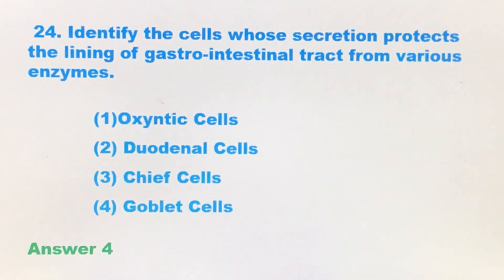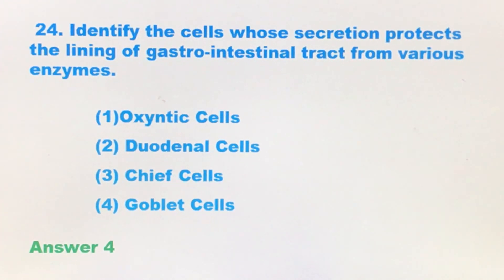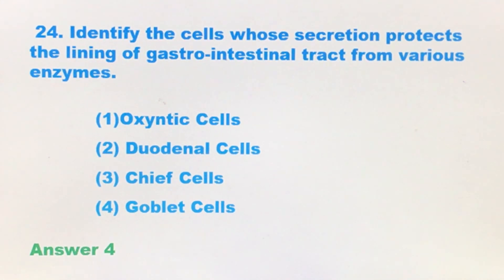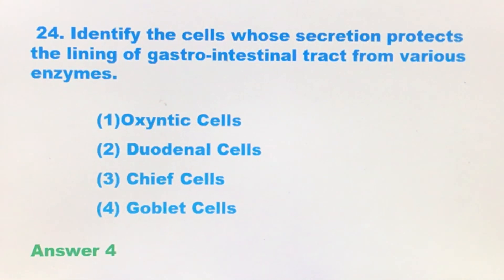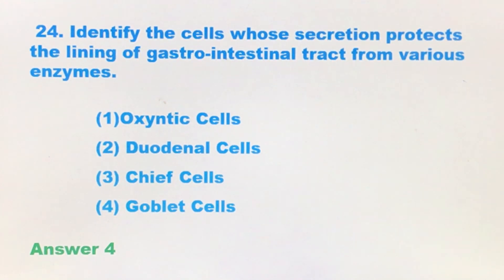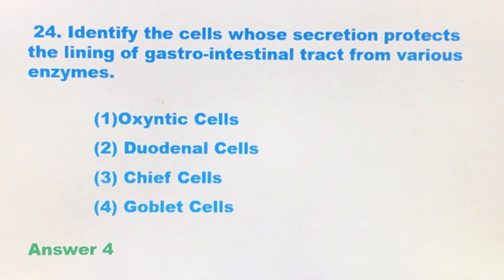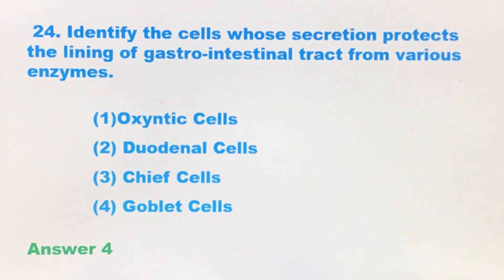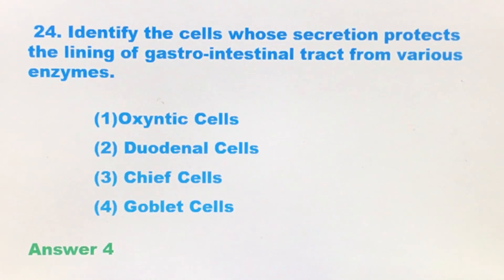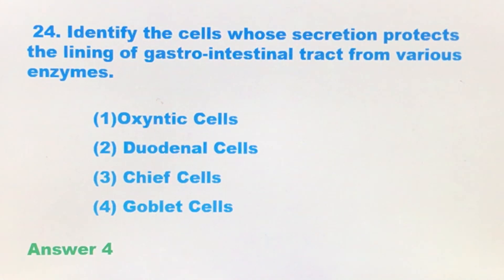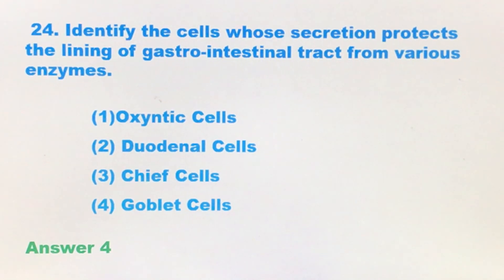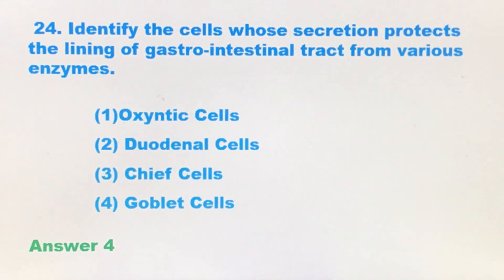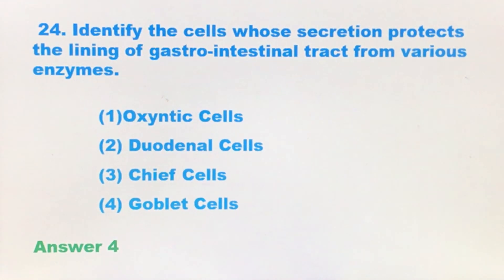The fourth option is goblet cells. Goblet cells are the ones which produce mucus, and their main function is to protect the whole of the GI tract. Goblet cells do not produce anything other than mucus, and this mucus is the one which protects the whole of the GI tract. So goblet cells is the correct answer.